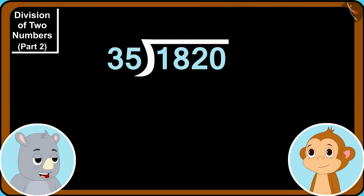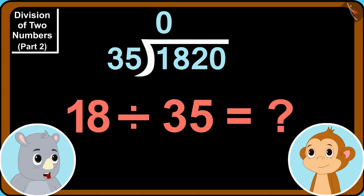No. Sir, we shall write a zero up here. Now we will look at the next digit and join it with the first. 18. Can we divide 18 by 35?